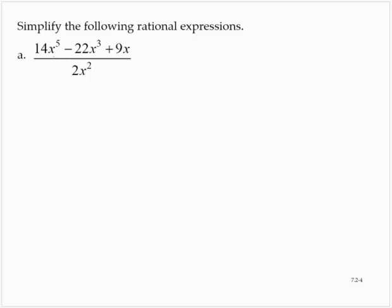Simplify the following rational expression. Here we have 14x to the fifth minus 22x to the third plus 9x over 2x to the second.